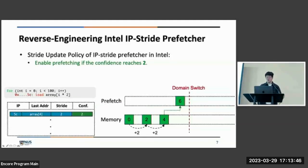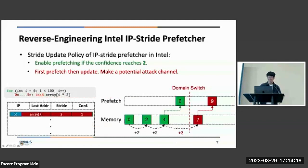So if the domain switches, maybe we go to another application. A new load instruction may match with the well-trained entry. And its memory access, for example element 7, could make a different stride compared to the recorded one. But we found that the prefetcher is still triggerable and prefetches element 9 into the cache. This implies that the Intel IP-stride prefetcher will first prefetch and then update the confidence and the stride, which makes a potential attack channel. We also note that the prefetcher will stop prefetch for the further access, and we will introduce why it matters later.